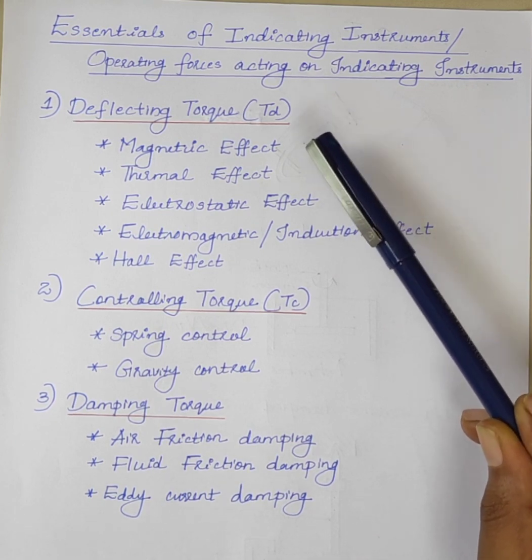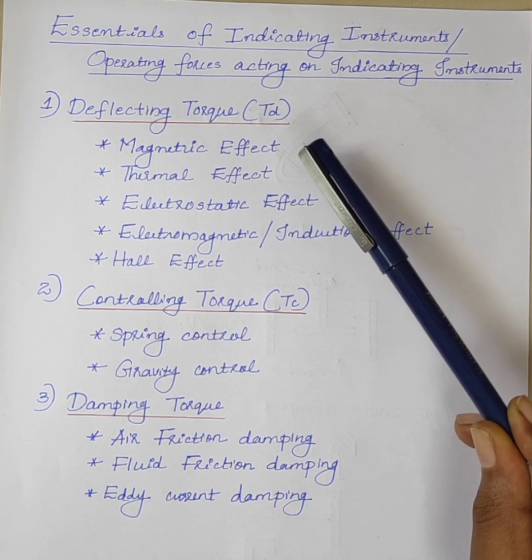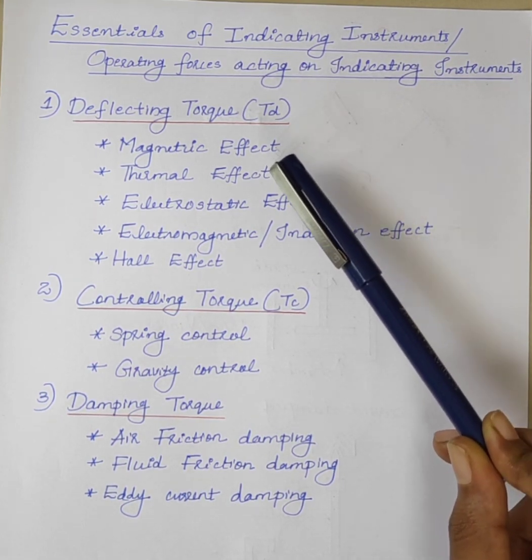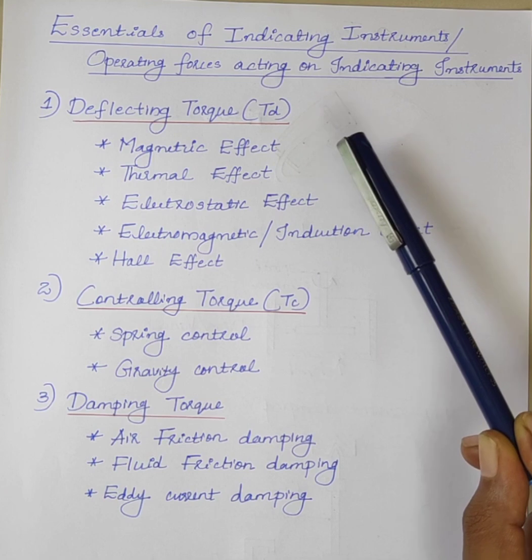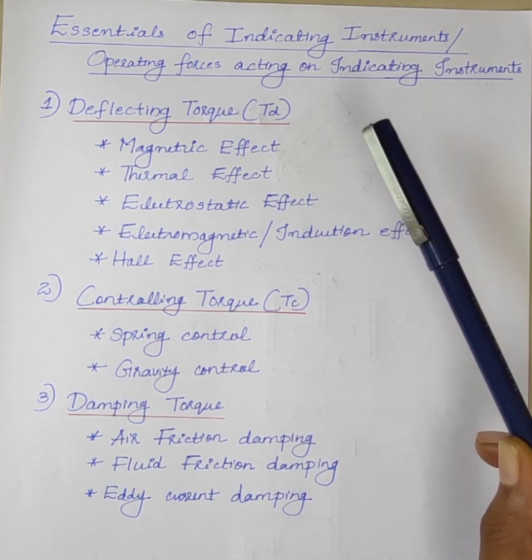They generally make use of a dial and a pointer for this purpose. The moving system of the indicating instruments consists of three torques or forces.